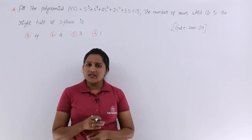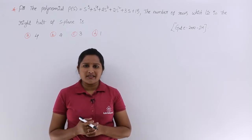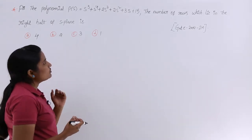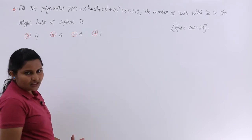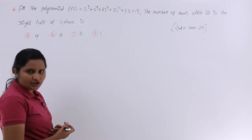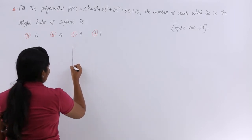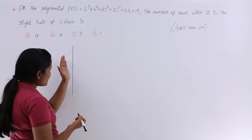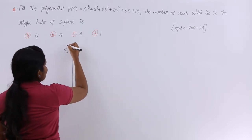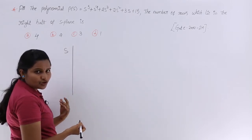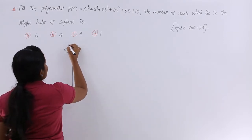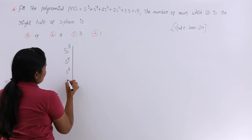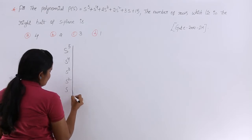For any problem related to stability analysis we go for the Routh array — that is the best way. To write the Routh array we require the characteristic equation, which is directly given here. From that characteristic equation I am going to draw my Routh array, considering S powers from maximum to minimum: S⁵, S⁴, S³, S², S, and S⁰.